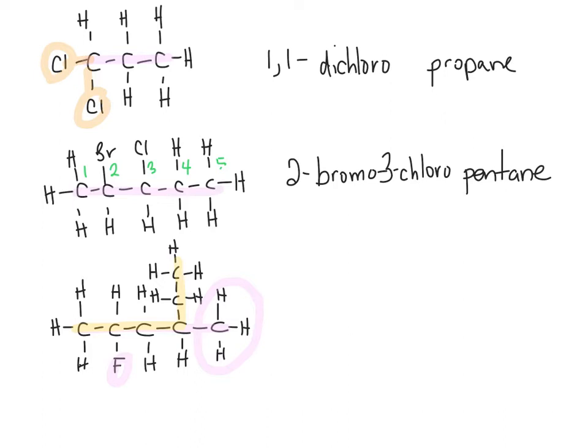So always find your longest carbon chain first, and to do that, you don't take your highlighter off the page. You can't jump around. So because we have 6, our root, our parent is hexane. And the fluorine is on the second carbon, counting from the left. You want the lowest possible number. So start with the end closest to the fluorine.